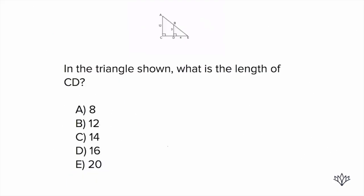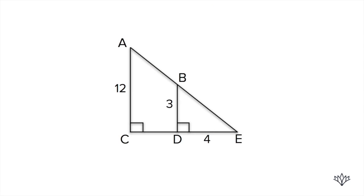There's a common thing that shows up on a lot of questions, and this common thing is when you see a right triangle within another right triangle — and it's got to be a very specific setup. The question says: in the triangle shown, what is the length of CD? We have a right triangle and then another right triangle within it. Let's pay attention to these two right triangles and see if they're similar.